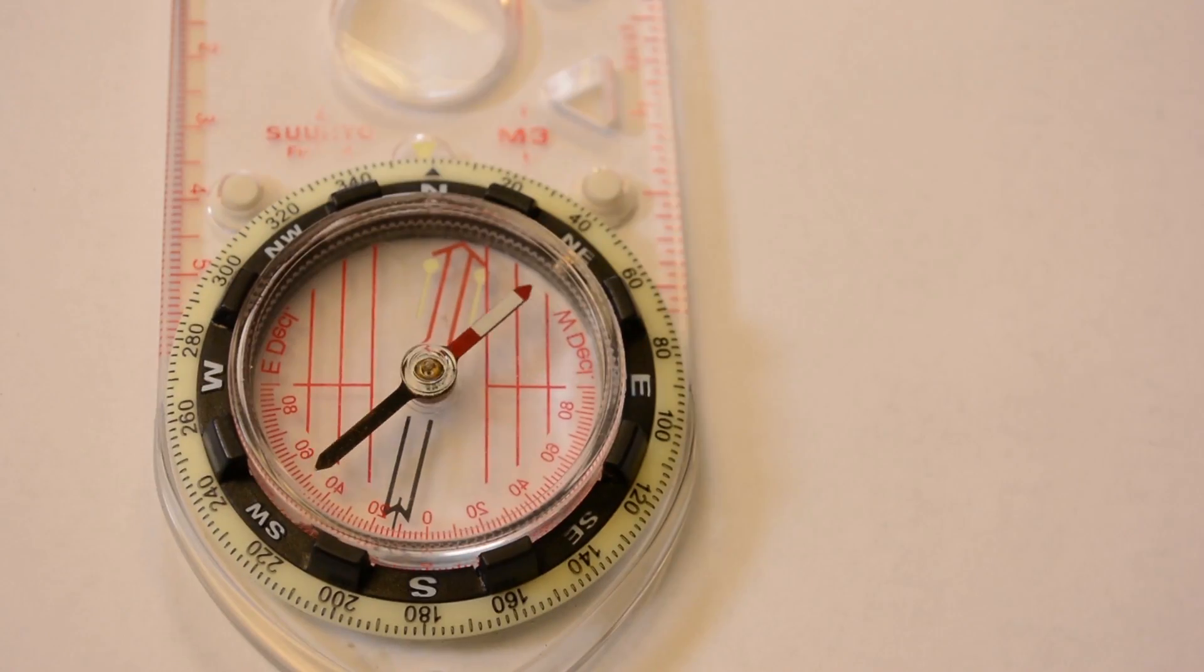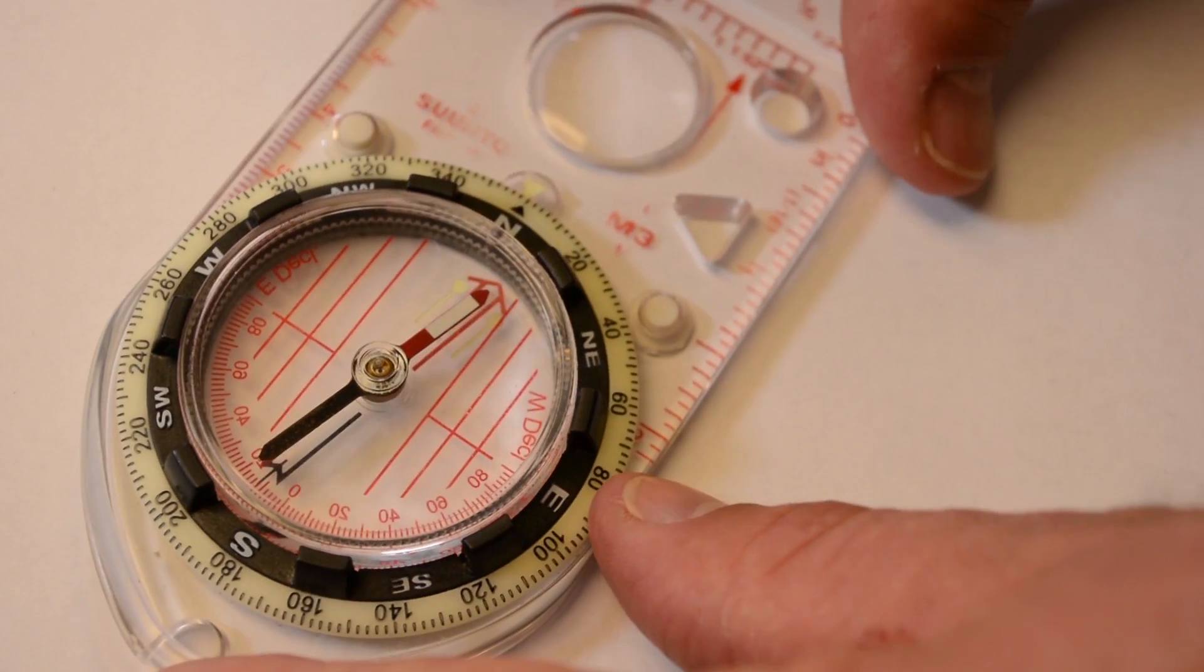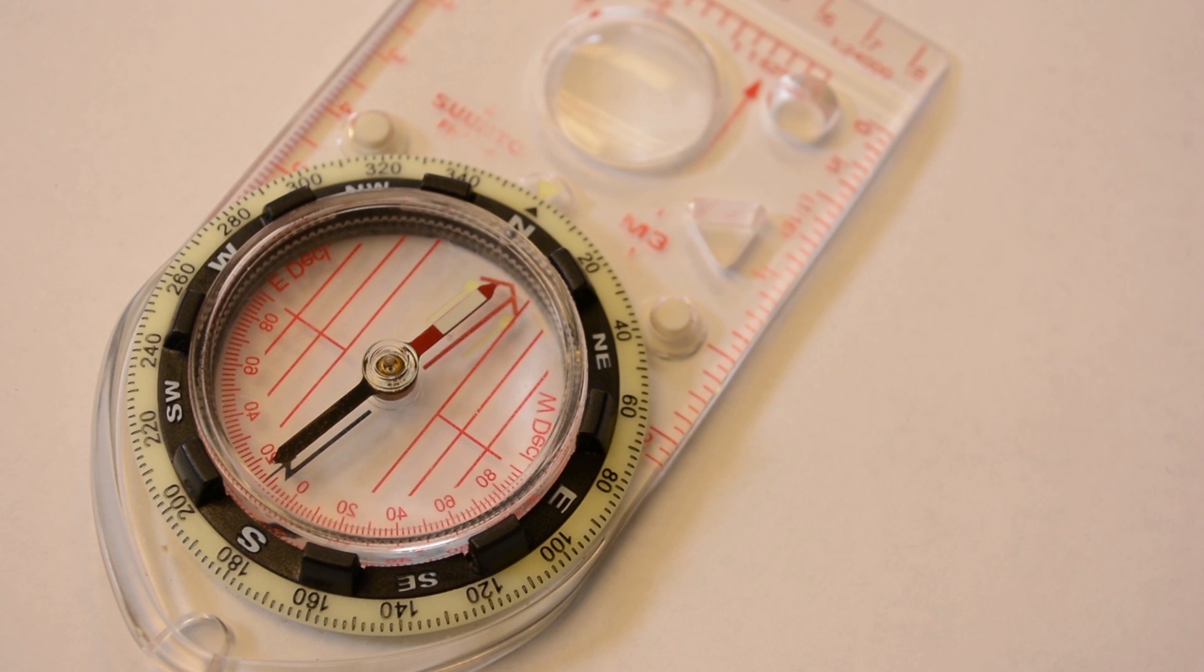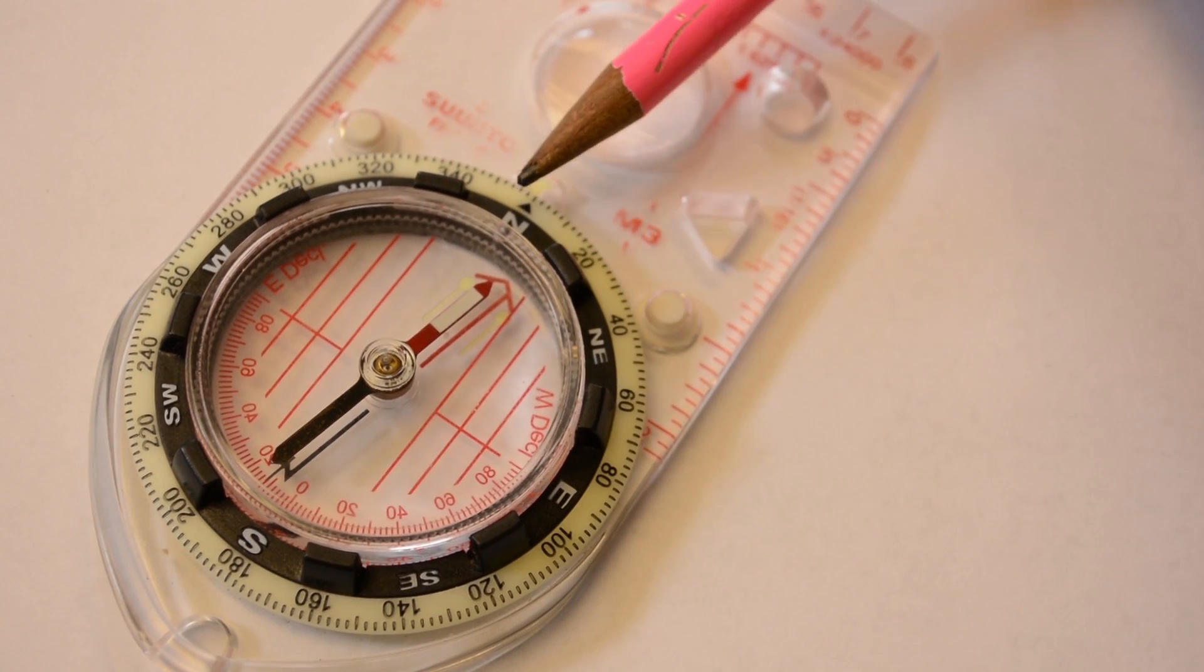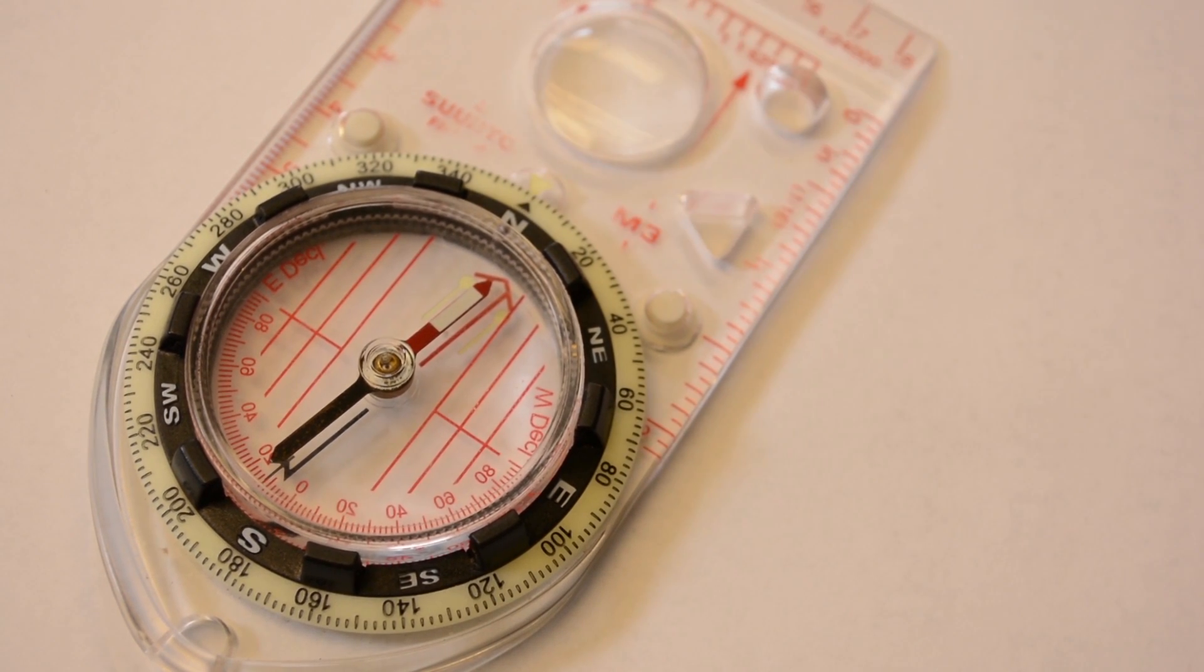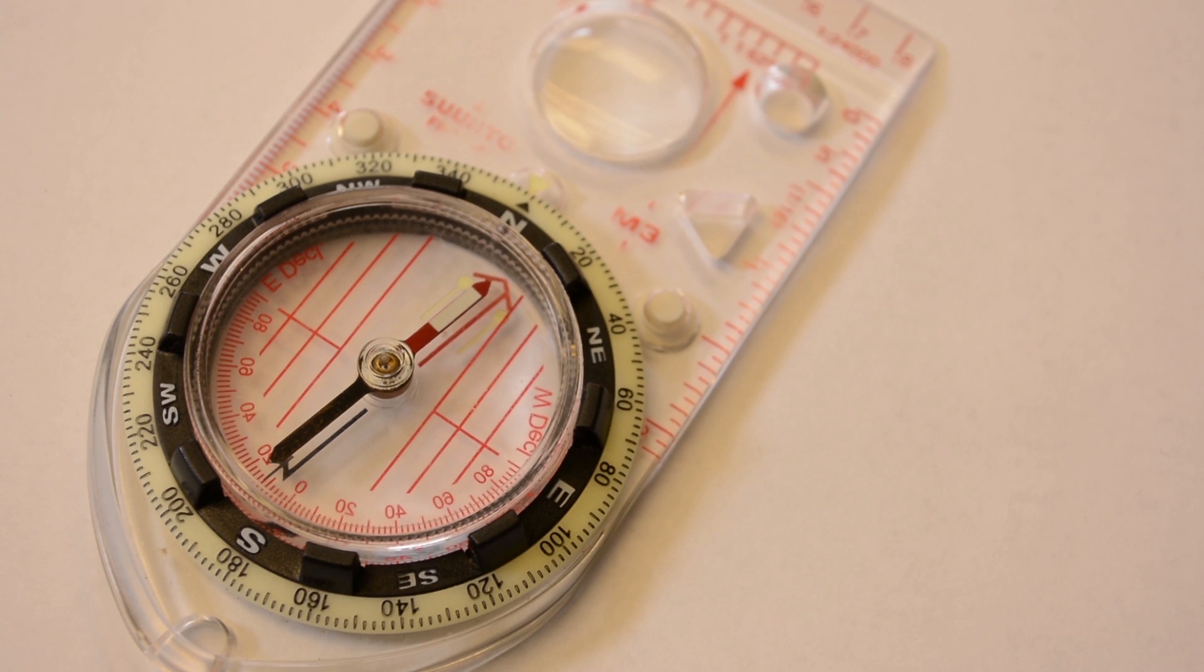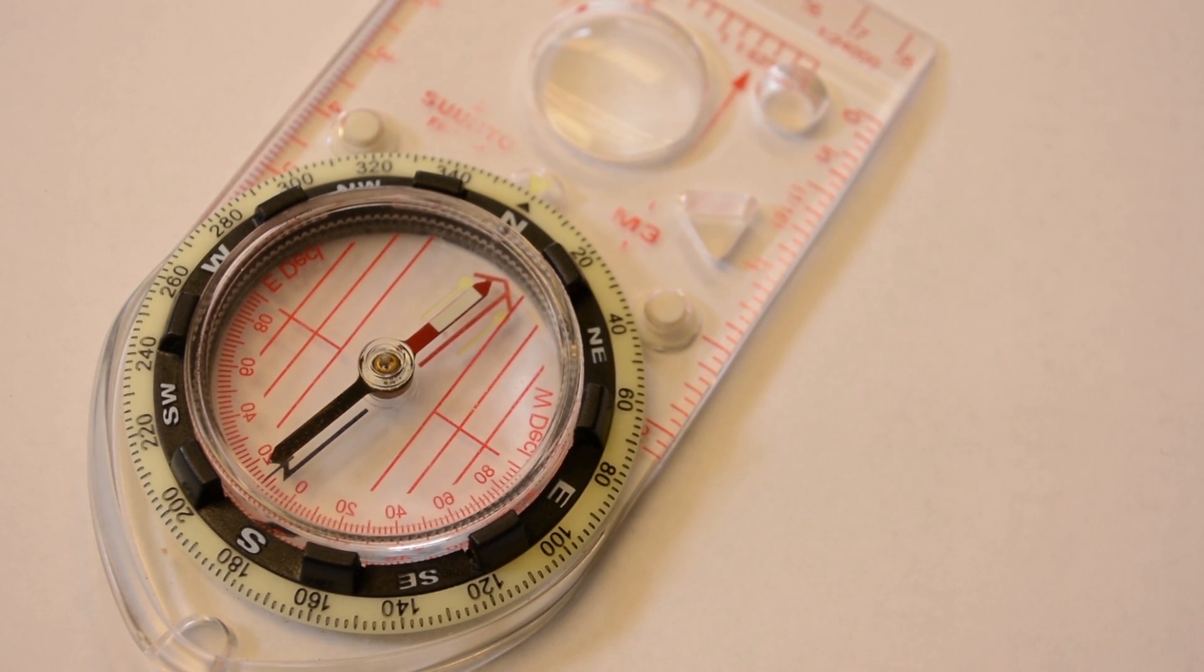Now when we turn our compass over and put red in the shed, the needle's pointing to magnetic north but our bearing here is to zero or true north. Our compass is properly adjusted for declination and we're ready to go.